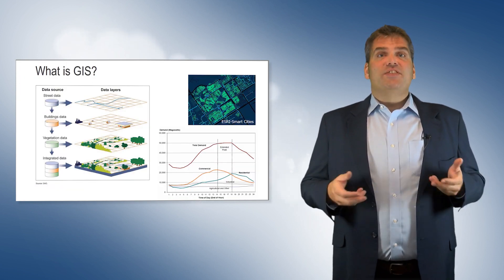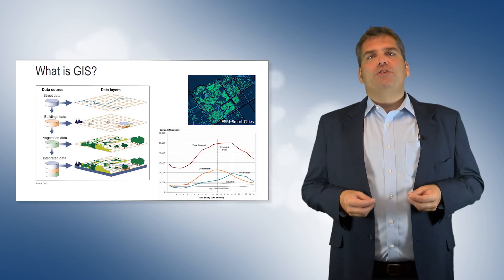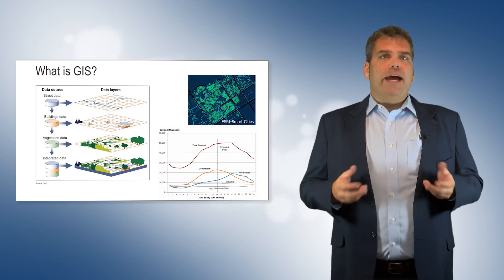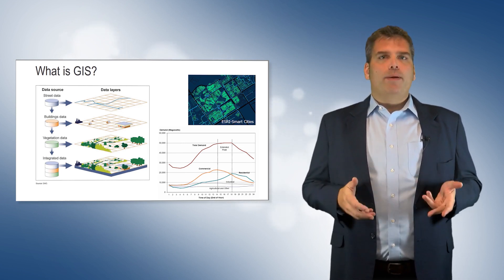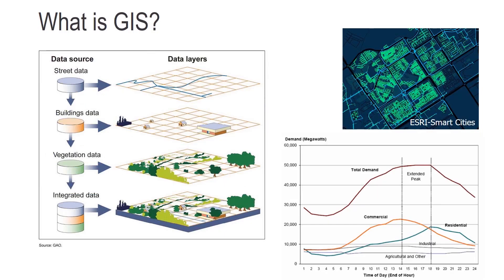GIS can stand for Geographic Information Science or Geographic Information System. GI Science raises questions concerning the acquisition, processing, representation, and analysis of geospatial data. Geographic Information Systems are tools that allow GI scientists to manipulate geospatial data.